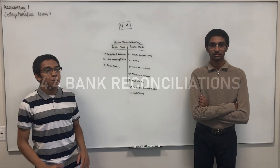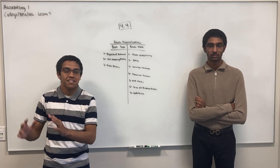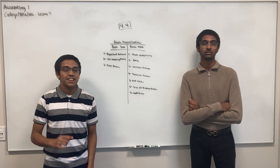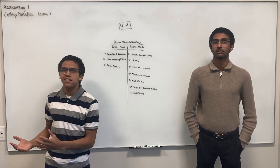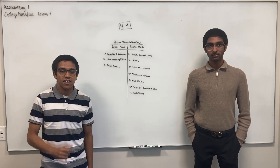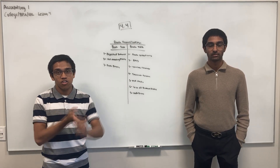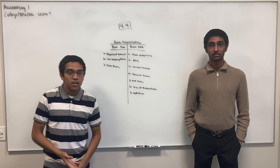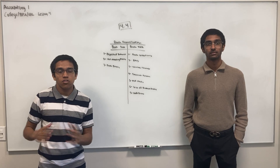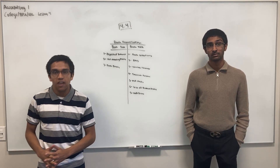A bank reconciliation's purpose is to adjust the balance between the book side and the bank side due to timing differences and errors. Cash is kept in a bank account because banks keep cash safe. Documents used to control cash include a signature card, a deposit ticket, a check, and a bank statement. The bank reconciliation is essentially an adjusting entry that accounts for the difference between the bank balance and the company's cash balance.